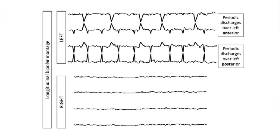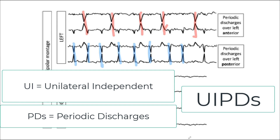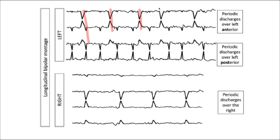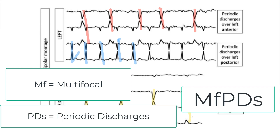Here is an example of discharges occurring independently in two different regions but both in the same hemisphere — left frontal indicated in red, and a second set in the posterior head region indicated in blue. Because they are clearly independent, we call these unilaterally independent, or UI, periodic discharges — a new term in the 2021 nomenclature. When a third independent focus exists in the right hemisphere as well, we use the term multifocal or MF, giving us multifocal periodic discharges, or MFPDs.